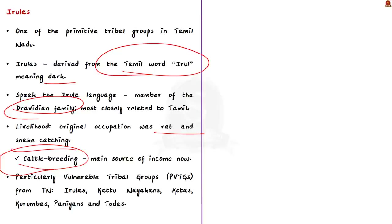The Irula speak the Irula language as their mother tongue, which is a member of the Dravidian family. Their original occupation was rat and snake catching, but now cattle breeding is the main source of income. They also work as laborers in fields during sowing and harvesting seasons. Irulas are one of the Particularly Vulnerable Tribal Groups — PVTGs — from Tamil Nadu. In India there are 75 PVTGs, and Irula are one of the important PVTGs from Tamil Nadu. Other PVTGs from Tamil Nadu include Kattu Nayakans, Kotas, Kurumbas, Pannians, and Todas.